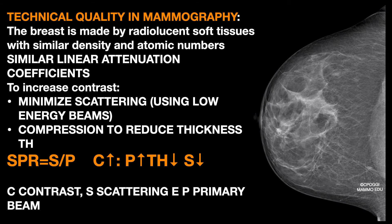The breast is an organ made of relatively radiolucent soft tissues with very similar density and atomic number. Their linear attenuation coefficient — that is to say their capacity to attenuate the radiant beam by removing a fraction of photons from it — are similar. The contrast between healthy and pathological tissue is very low. It must be increased by minimizing scattering. That is the reason why low energy beams are used in mammography, and by applying compression of the breast in order to obtain a reduction of its thickness.